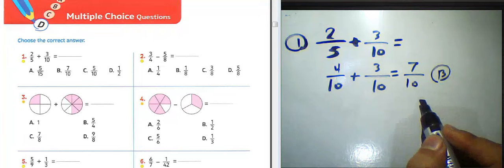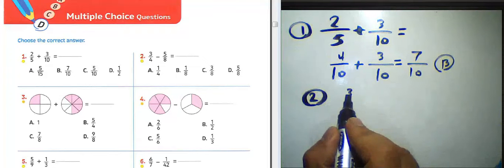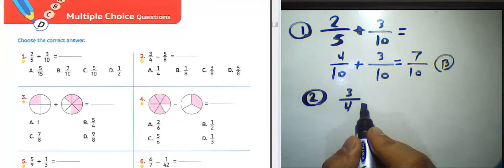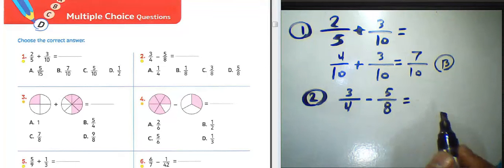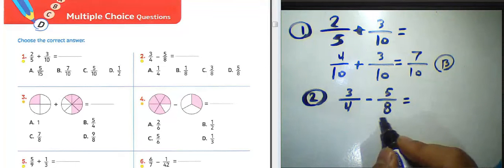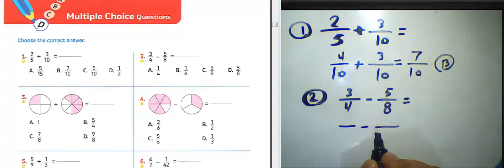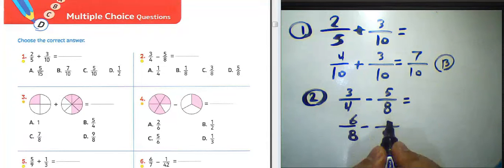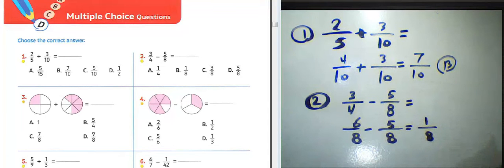Don't forget to choose letter B about question number one. Question number two: 3 over 4 subtract by 5 over 8. We can find the result by writing the least common multiple between them. 8 can be divided by 4, so the LCM equals 8. 4 times 2 equals 8, and 3 times 2 equals 6. Then 6 minus 5 equals 1, so the result will be 1 over 8.